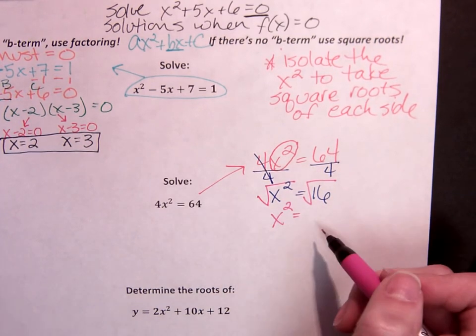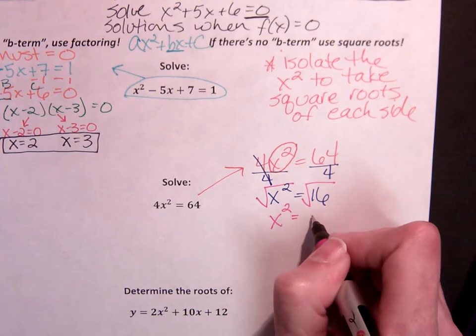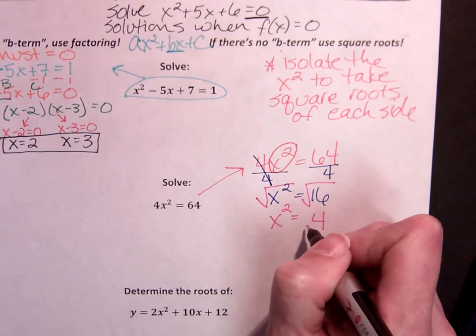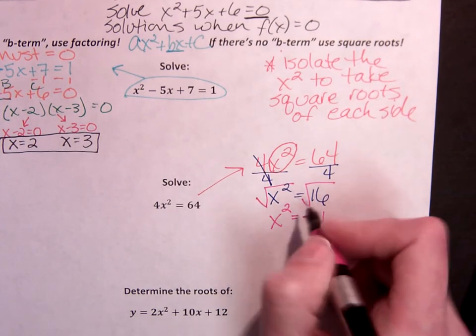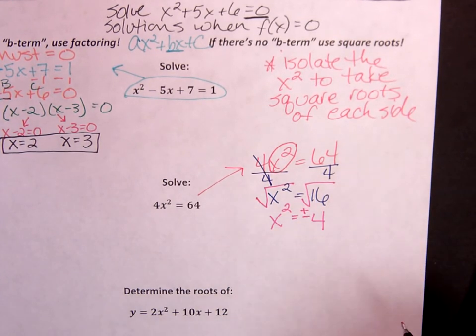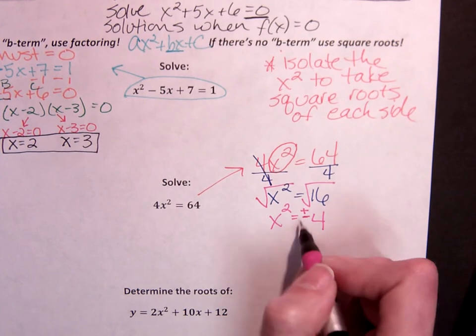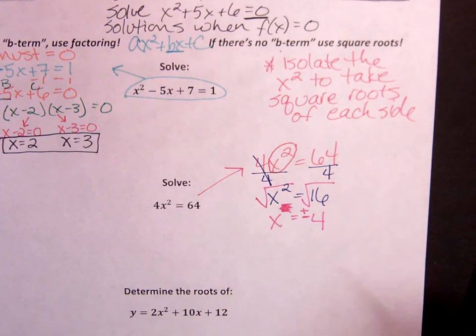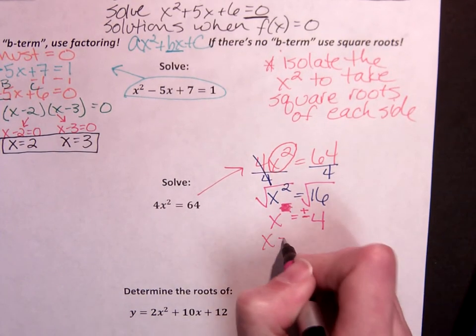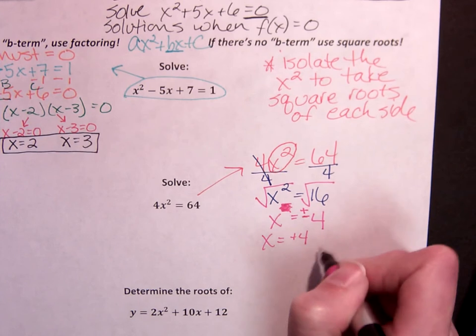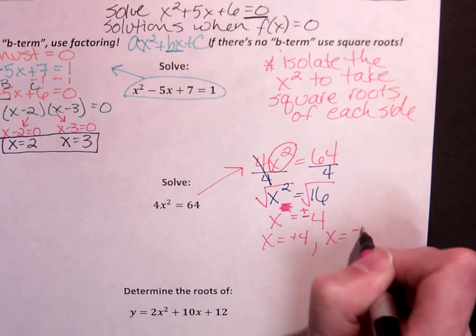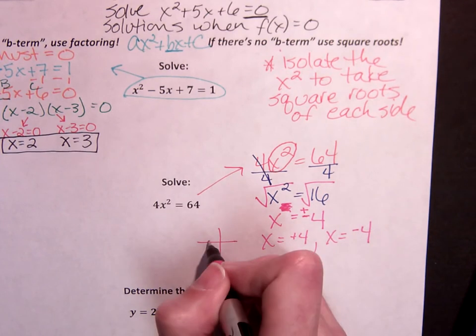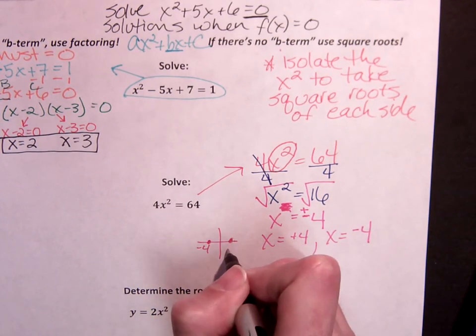This is something you've got to be careful about because remember, 4 squared gives me 16, but so does negative 4. So this is where the symbol comes from, literally say plus or minus 4. Squared shouldn't be there. So we can say that x equals positive 4 and x equals negative 4. I know that this parabola crosses the x-axis at negative 4 and at positive 4.